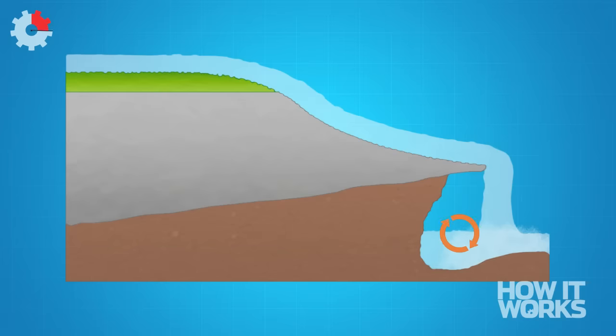Further erosion, worsened by the splashback from the falling water in the plunge pool, causes the overhanging hard rock to eventually collapse under its own weight.